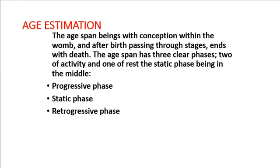Today we will discuss how to estimate the age. The age span begins with conception within the womb and after birth, passing through different stages, and ends with death. The age span has three clear phases: two of activity and one of rest, the static phase being in the middle. The three phases are: first, progressive phase; second, static phase; third, retrogressive phase.